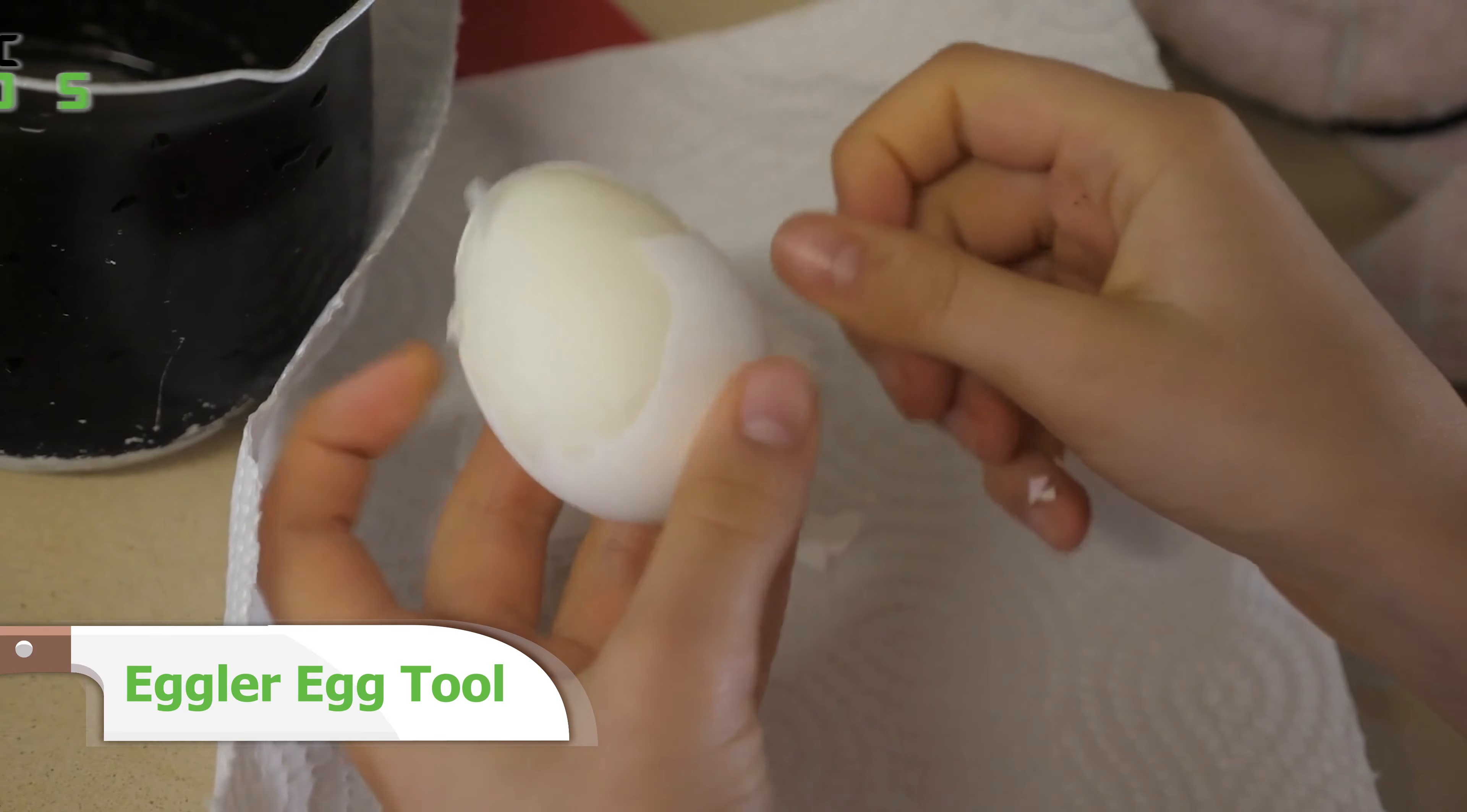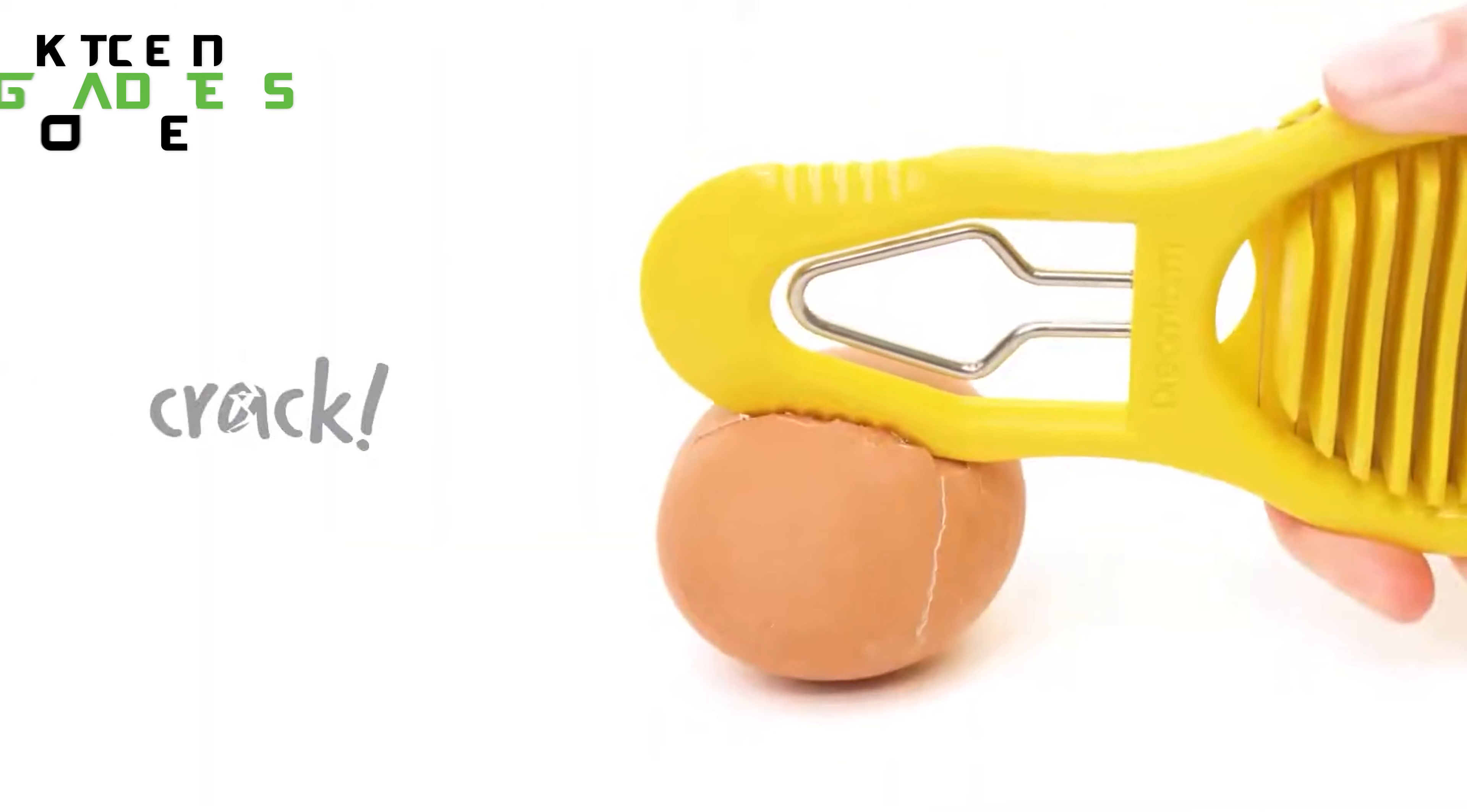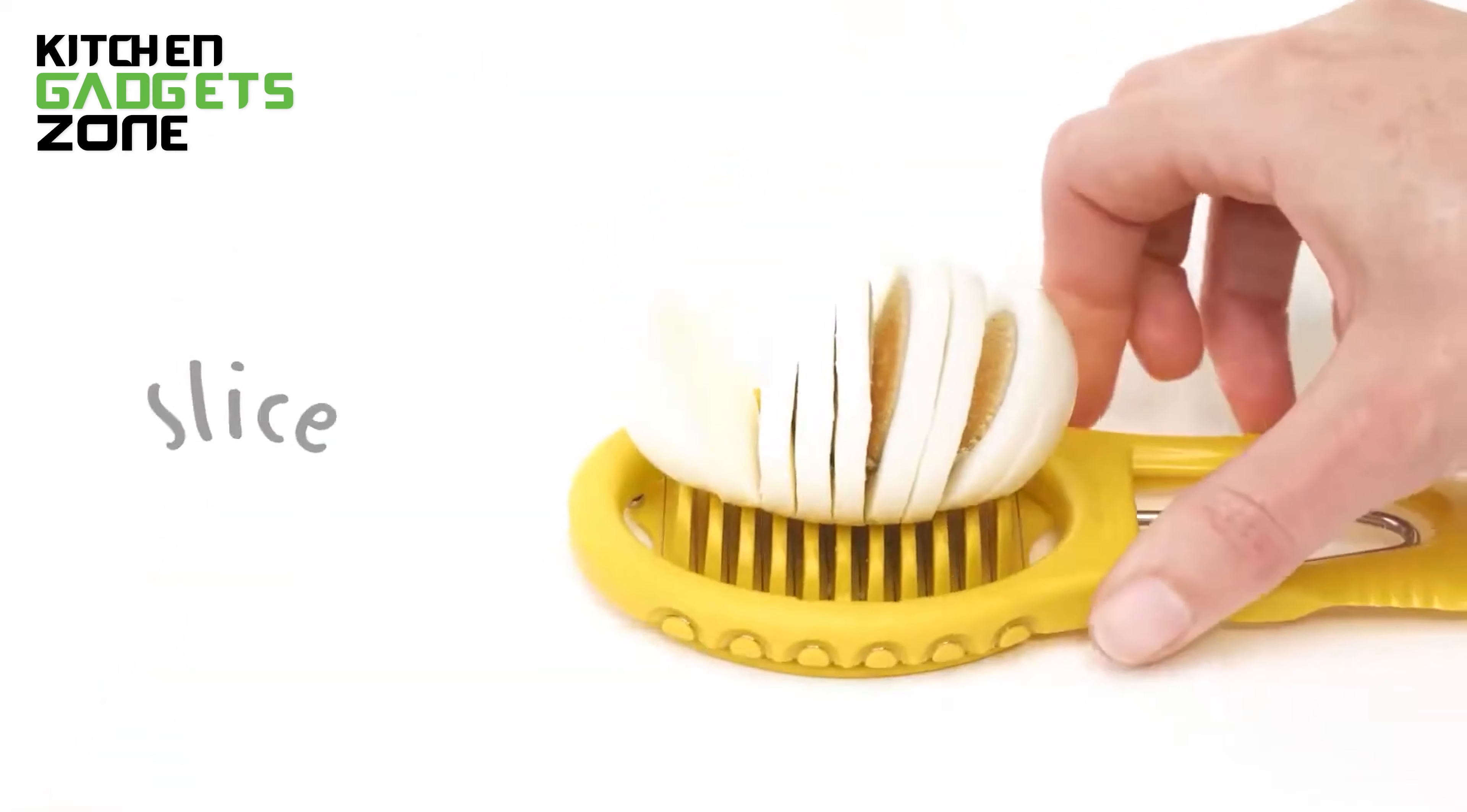Eggs are a kitchen staple, but prepping them can be a real pain. That's where the Eggler Egg Tool comes in to save the day. This versatile gadget is a cracker, peeler, and slicer all-in-one. A swift tap of the cracker creates a clean break in the egg shell, allowing the peeling paddle to glide under the membrane and separate the shell from the egg with ease. The integrated wire slicer creates clean and even cuts every time.